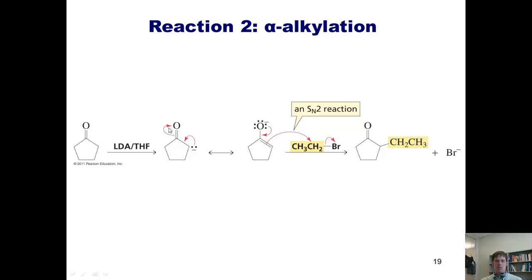The resulting enolate, which exists in two different resonance structures, can then be treated with an alkyl halide such as ethyl bromide. The electrons on the oxygen come down, form a double bond, and these pi-electrons go flipping out, grab this carbon, kick off the bromide leaving group, and place an alkyl chain solidly on the alpha-carbon. This is what we mean when we say alpha-alkylation.